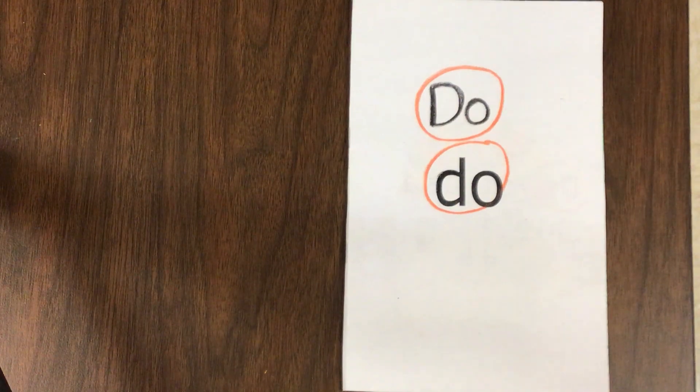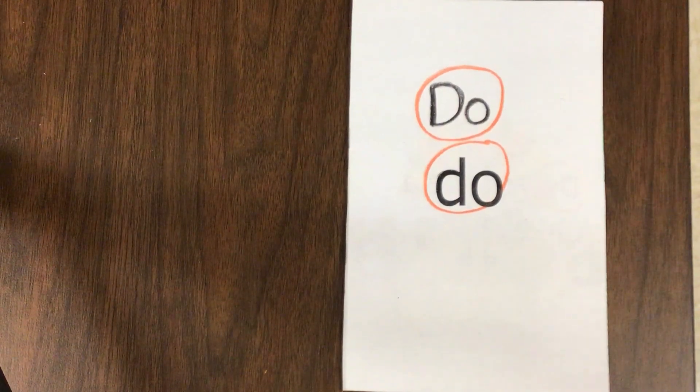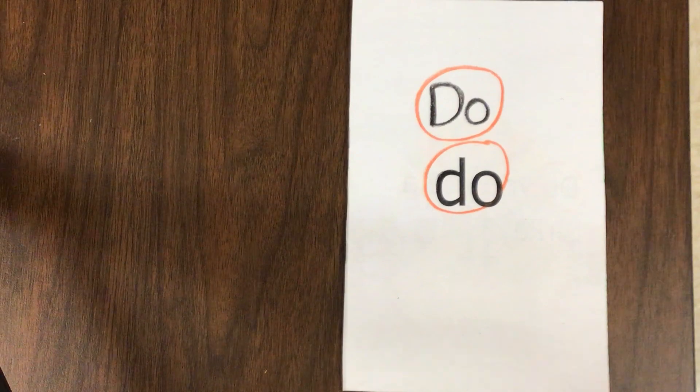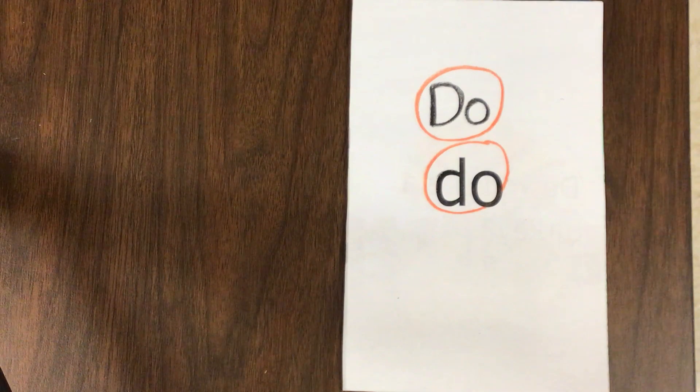Today we're going to read about the sight word 'do'. Do is the word that we use when we're asking questions. It makes the D sound, duh, but then the O doesn't make its usual sound. It doesn't say O or AW. It says instead,